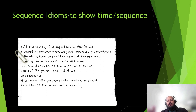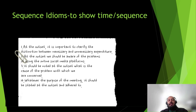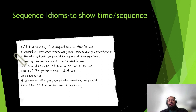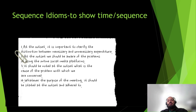Second example: 'At the outset, we should be aware of the problems of using online social media platforms.' Third example: 'It should be noted at the outset what is the cause of the problem with which we are concerned.' Fourth example: 'Whatever the purpose of the meeting, it should be stated at the outset and adhered to.' Fifth example: 'It is important to be consistent in your approach right from the outset.'